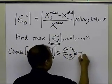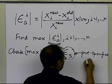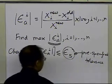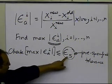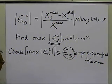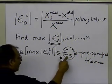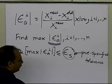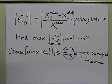So we check if the maximum absolute relative approximate error is less than or equal to the pre-specified tolerance. This tolerance may be given as a percentage, or someone might say they want two significant digits correct. If you want one significant digit correct, the tolerance should be 5%. If you want two significant digits correct, it should be 0.5%, and so on.